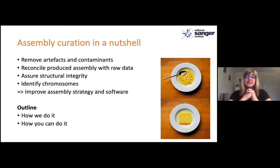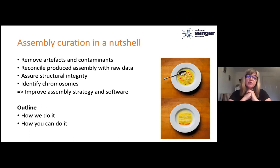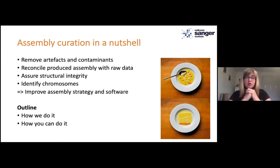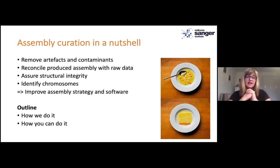Whilst doing so we are identifying and naming chromosomes. All this leads to a close feedback loop providing information on our findings, thereby improving the assembly strategy and also the assembly software, because we are working closely together with the people who develop all of this. What I'd like to talk about today is how we do this, and I hope I can convince you that it's worthwhile doing — and if so, I'd also like to show you how you can do it yourself.